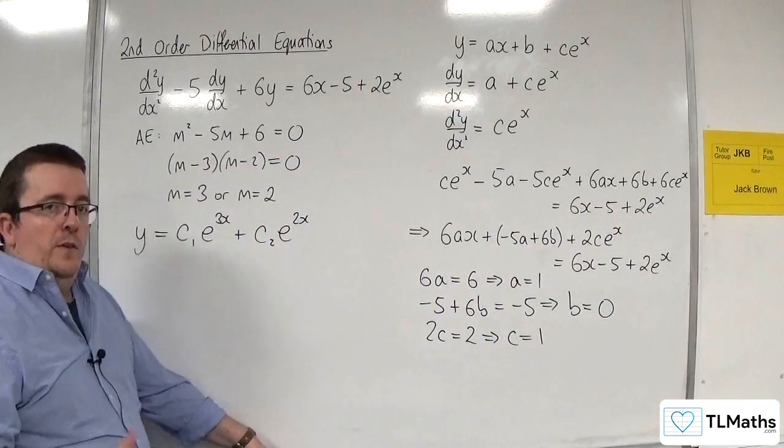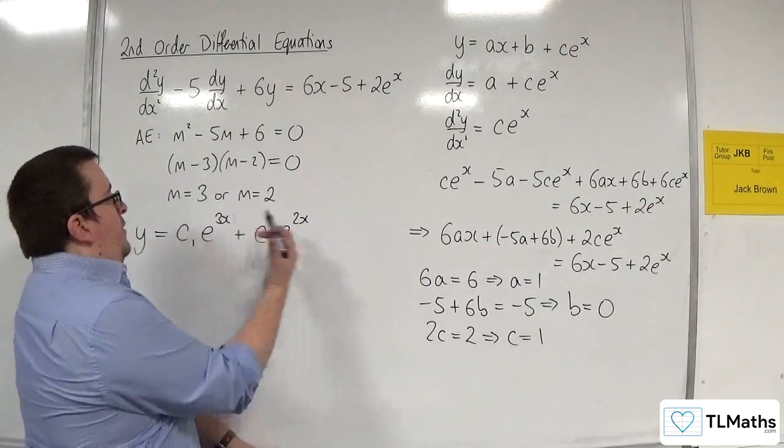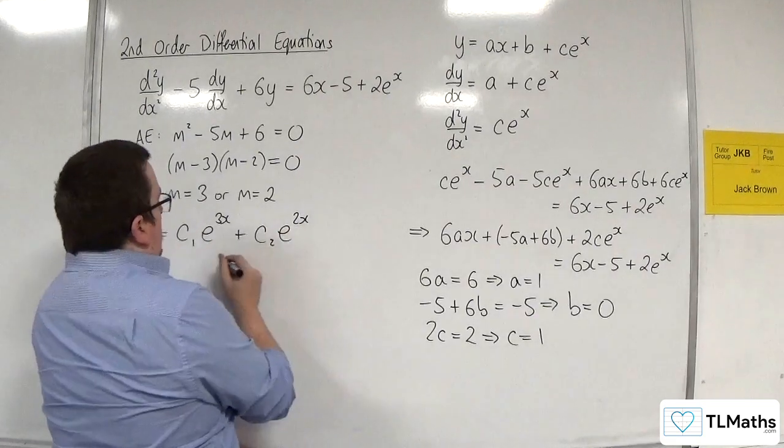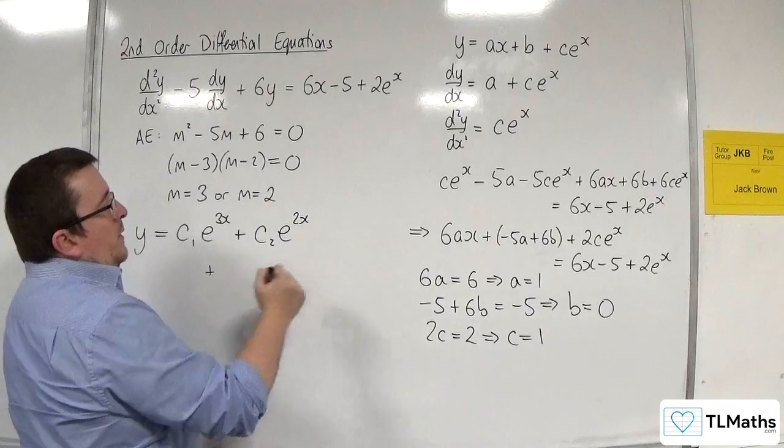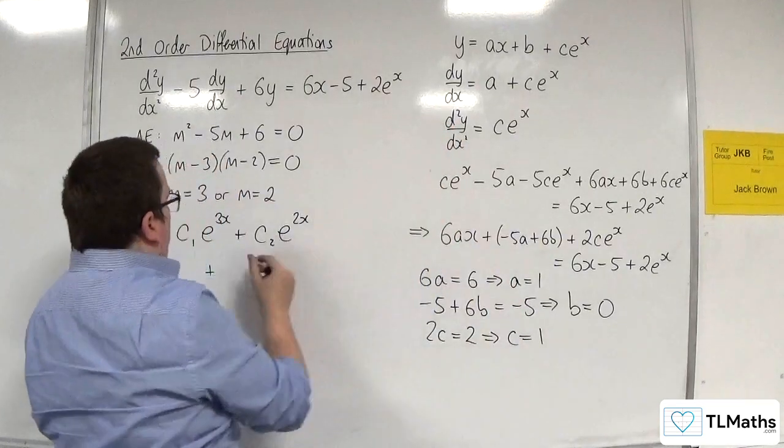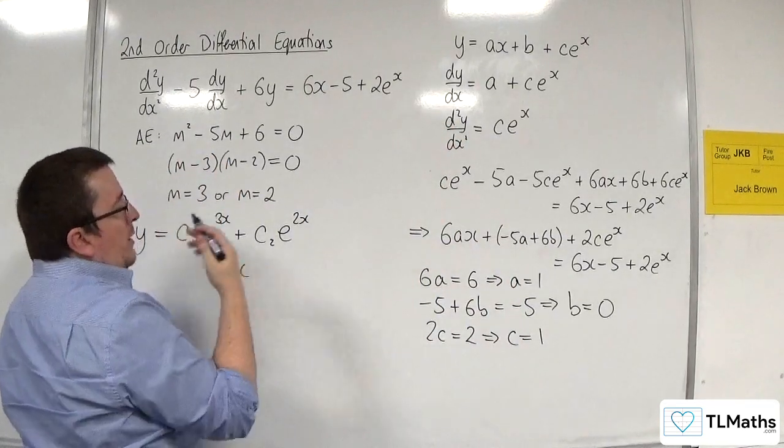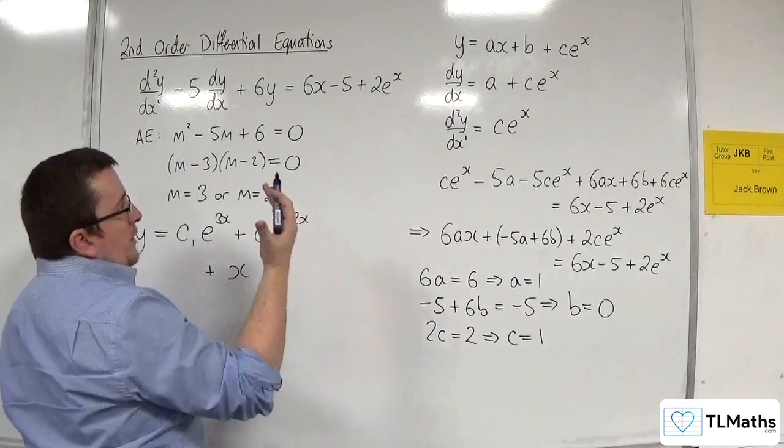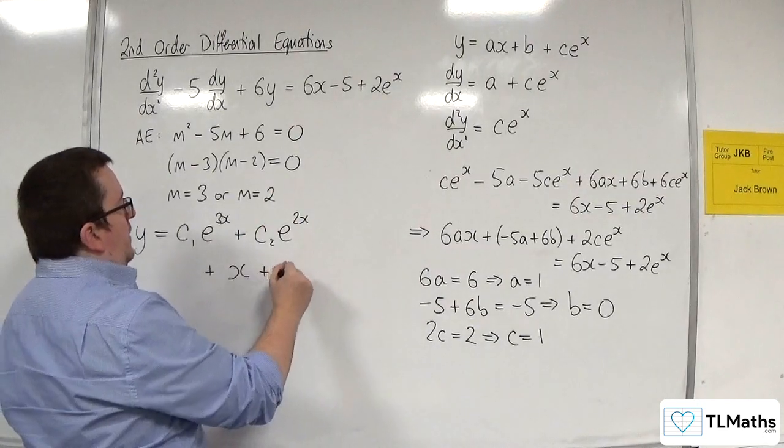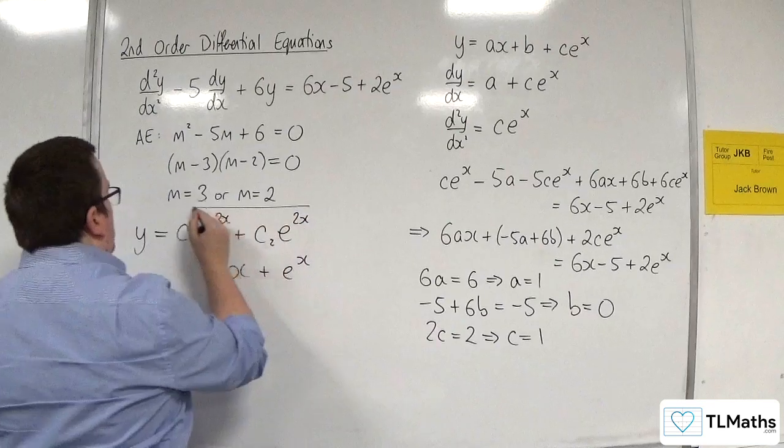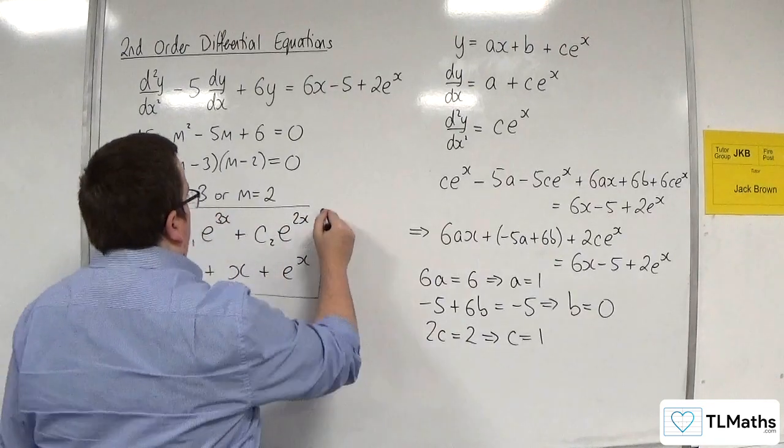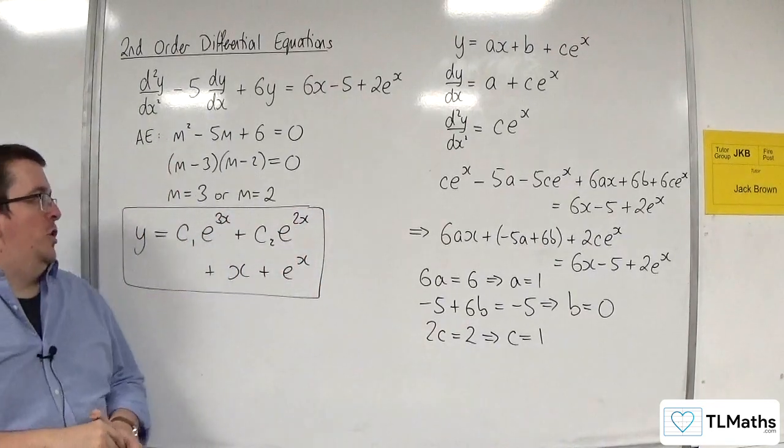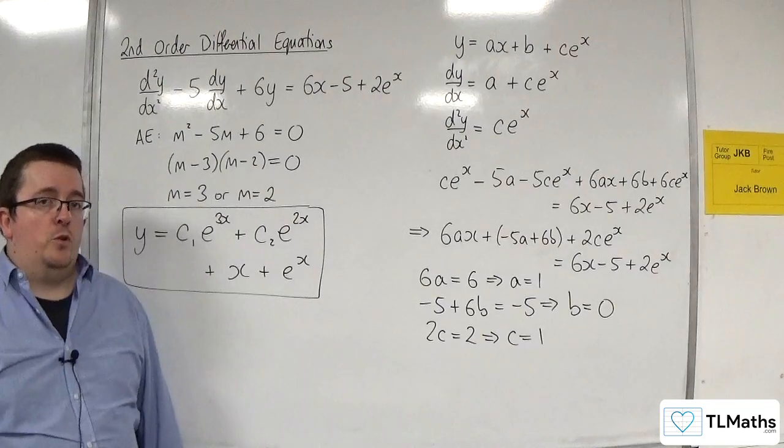So we now have the particular integral that we can add on to our complementary function. So plus a lots of x, so plus x, plus b which is 0, plus ce to the x, so plus e to the x. And so that is my general solution to the second order differential equation.